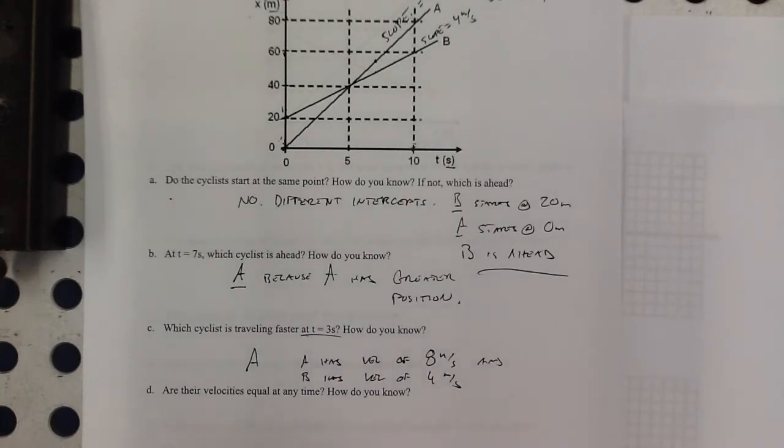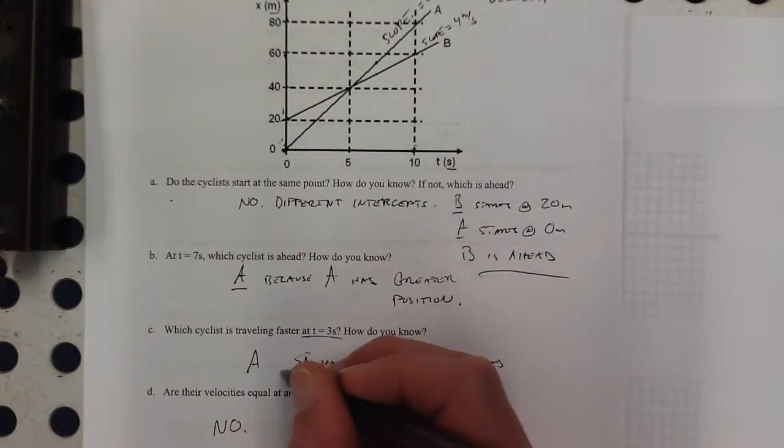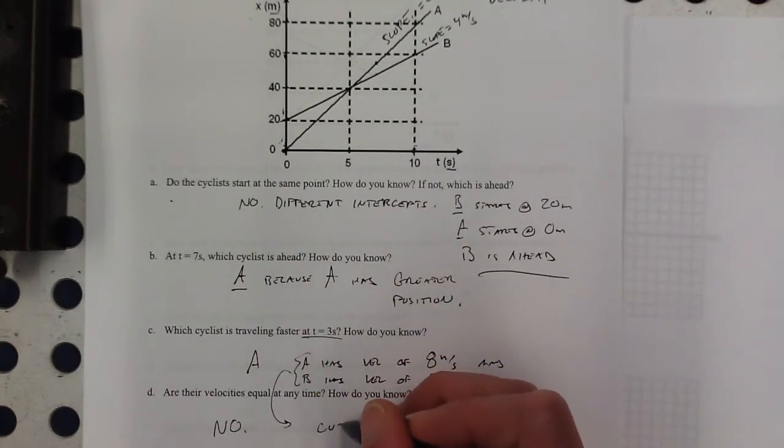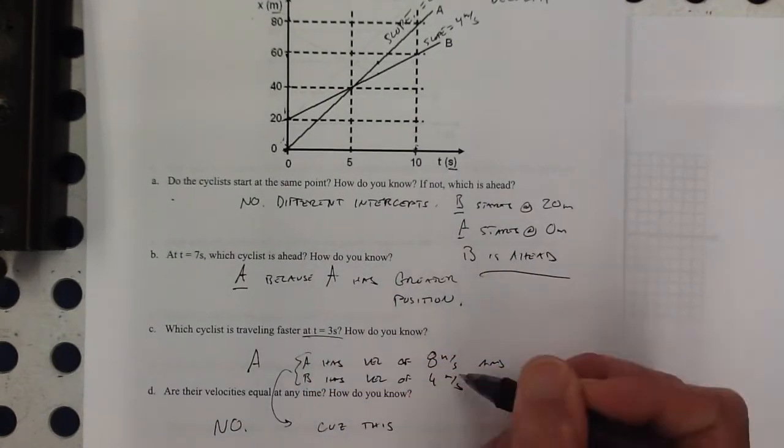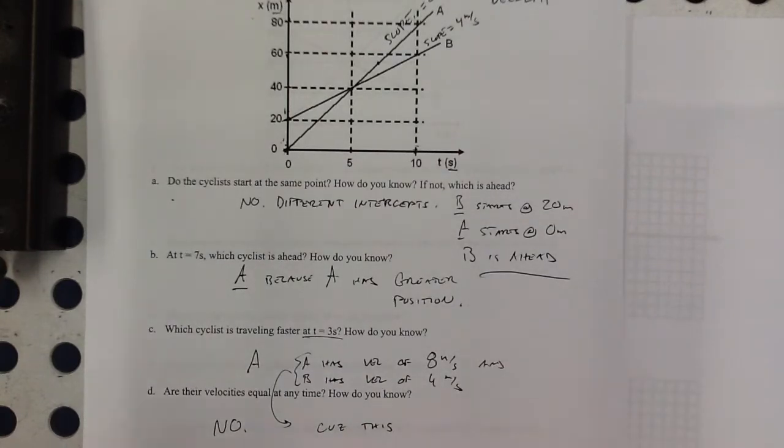A has a velocity of 8 meters per second, and B has a velocity of 4 meters per second. Are their velocities equal at any time? No. Because that one's always 8, that one's always 4.